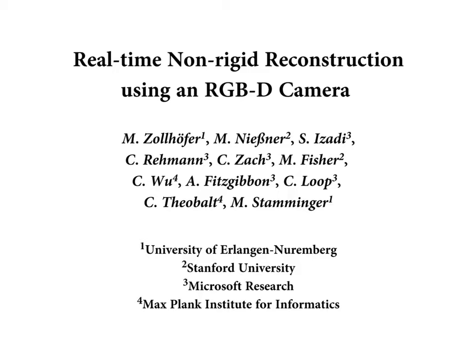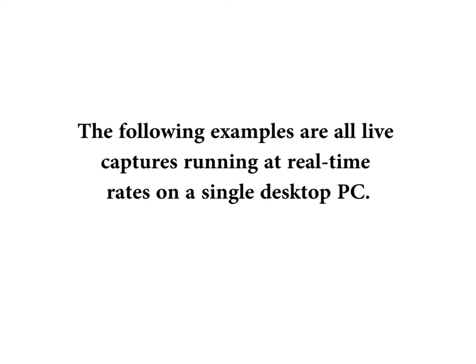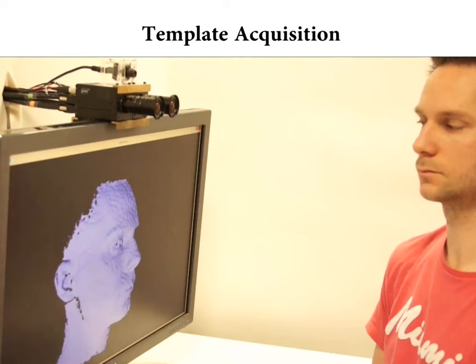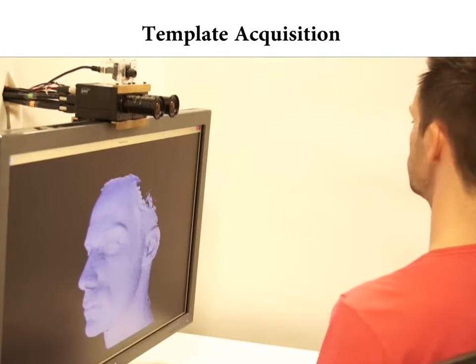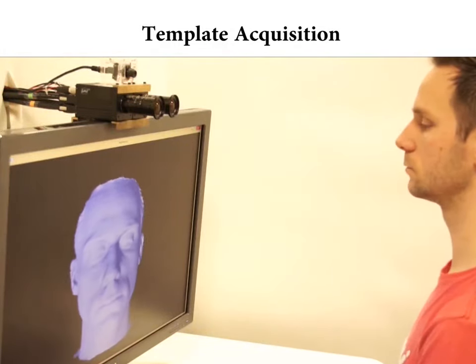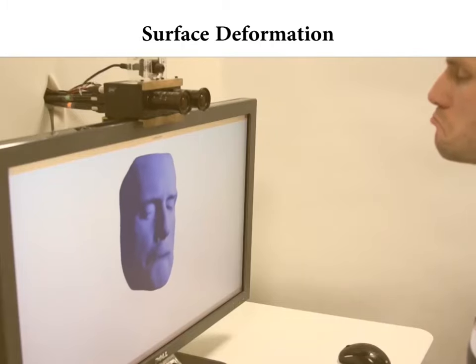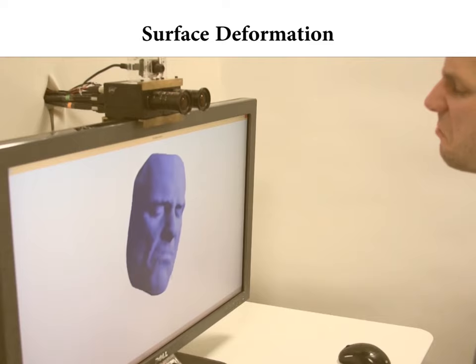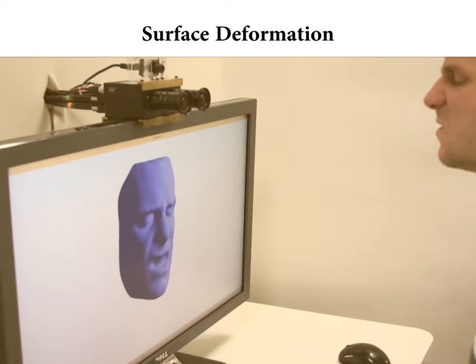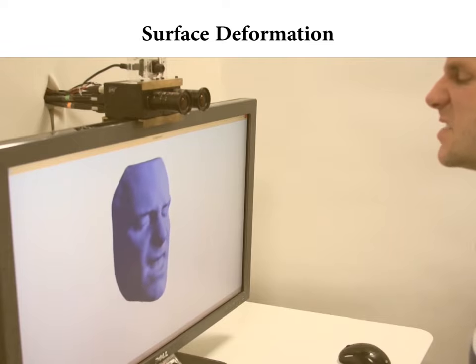We present real-time non-rigid reconstruction using an RGBD camera. The following examples are all live captures running at real-time rates on a single PC. The first step of our approach is to build up a deformation template under rigid motion. Once online template scanning is completed, we are able to capture non-rigid surface deformations. Here we can see how our method directly follows the facial expressions of the target.